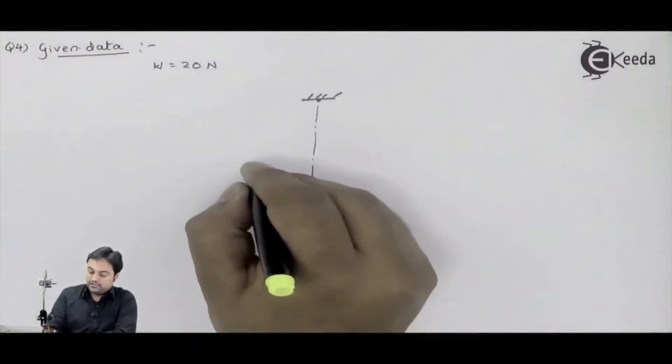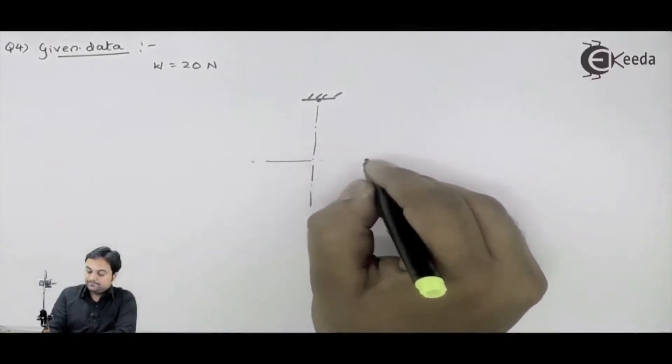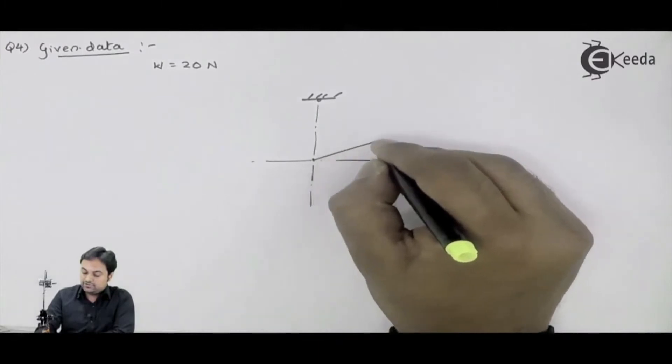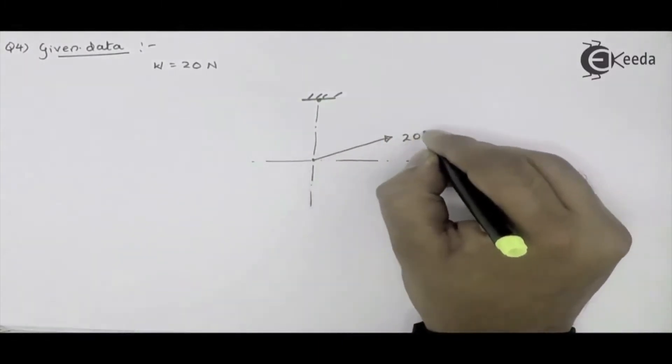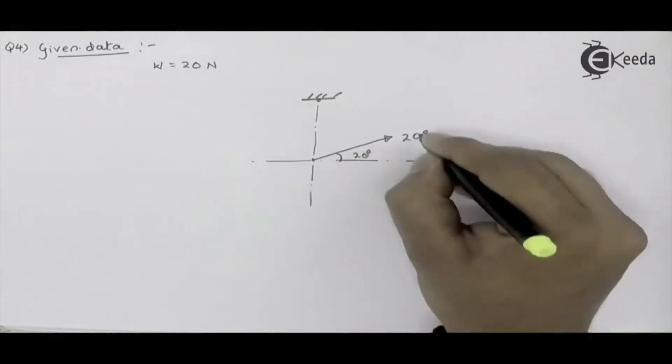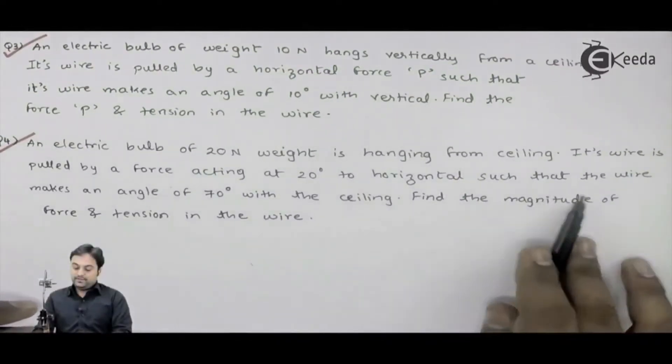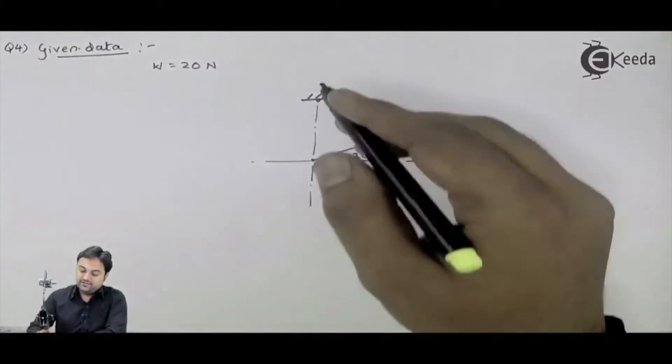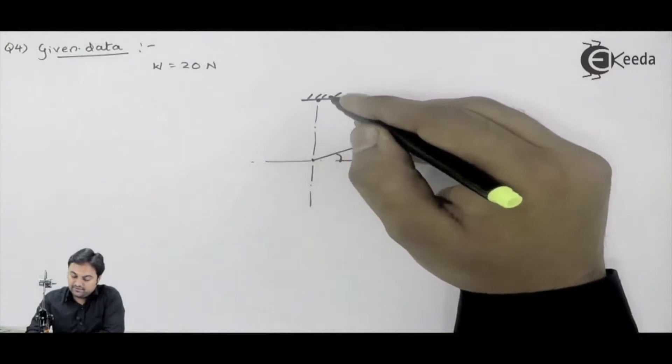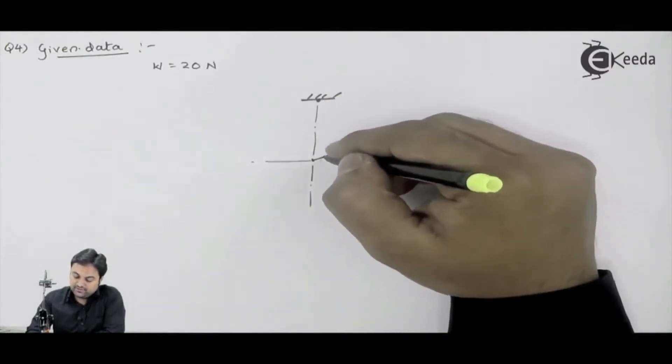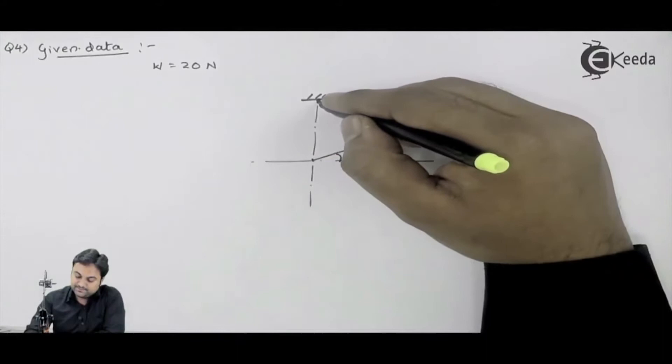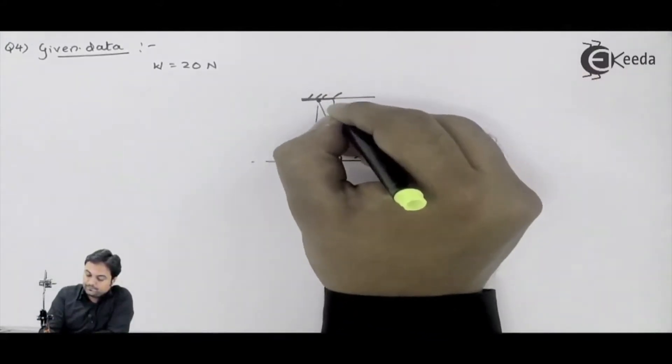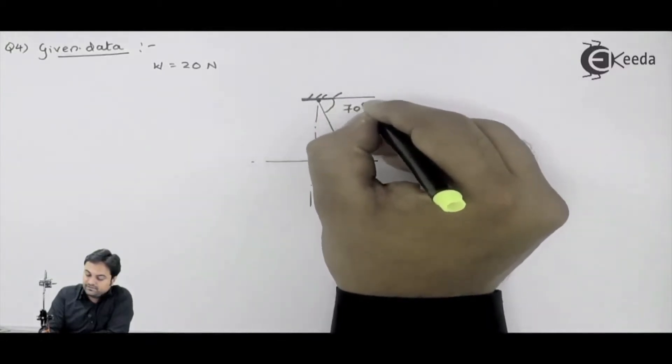Means if I have a horizontal line, to that horizontal line the force is inclined at 20 degrees. Next, such that the wire makes an angle of 70 degrees with the ceiling. In such a way that the wire will make an angle of 70 degrees with the ceiling.